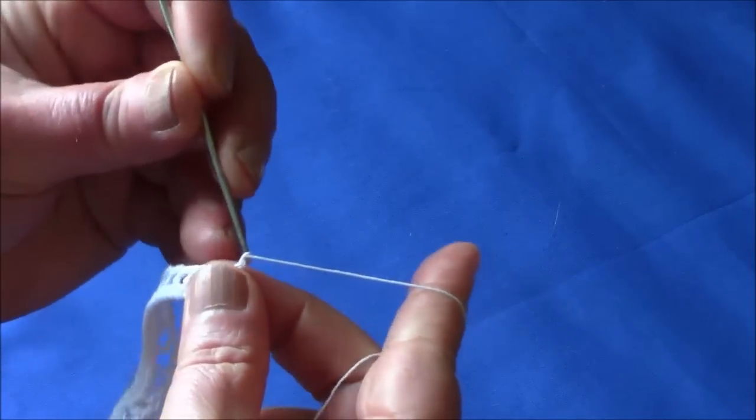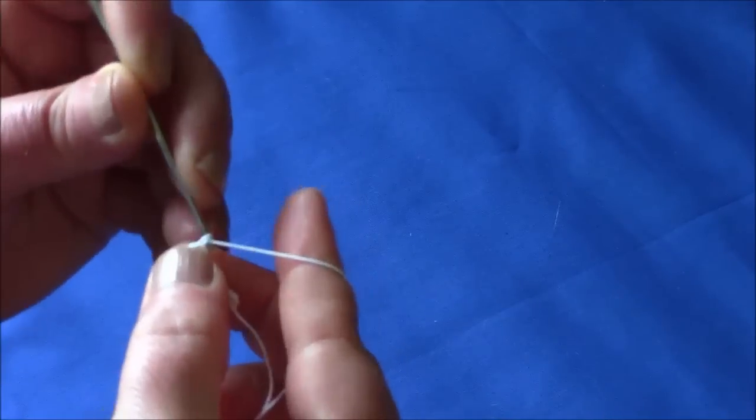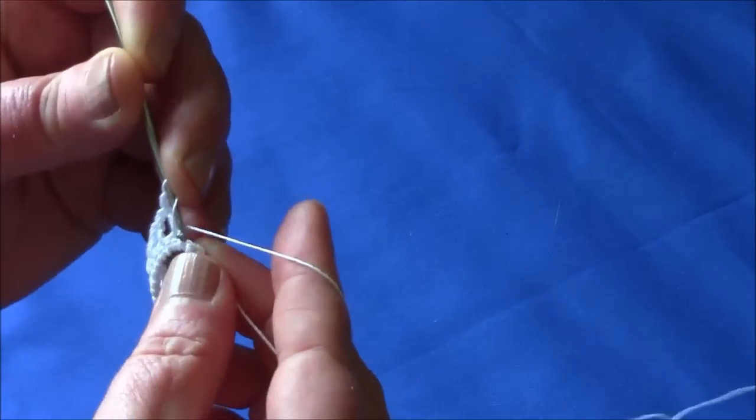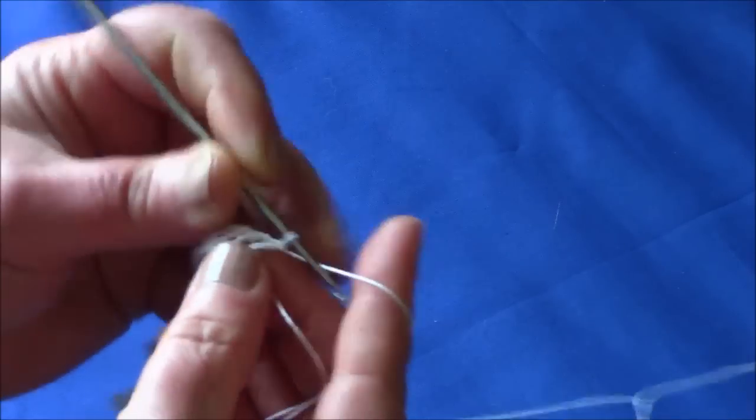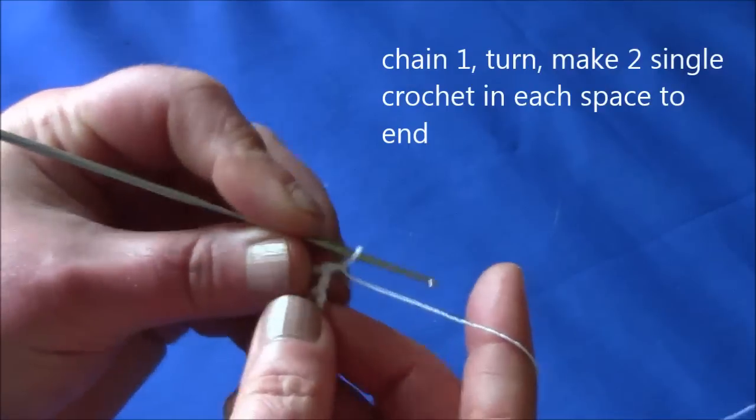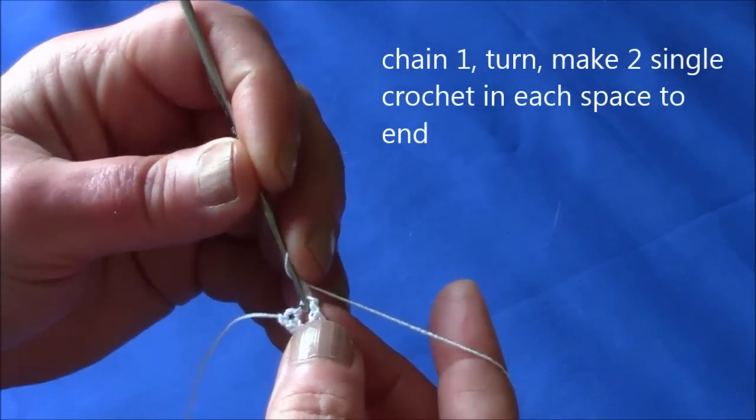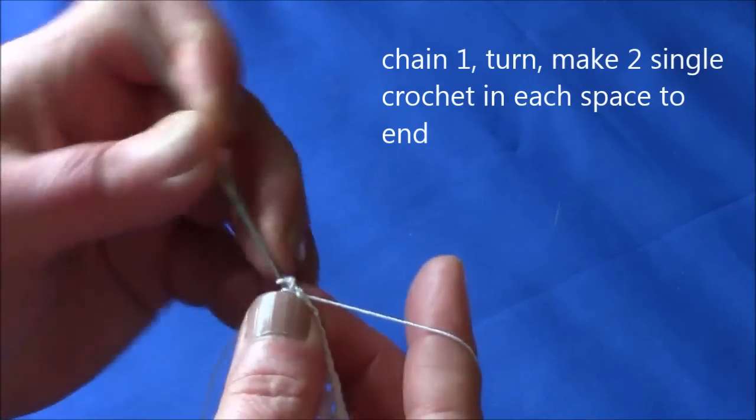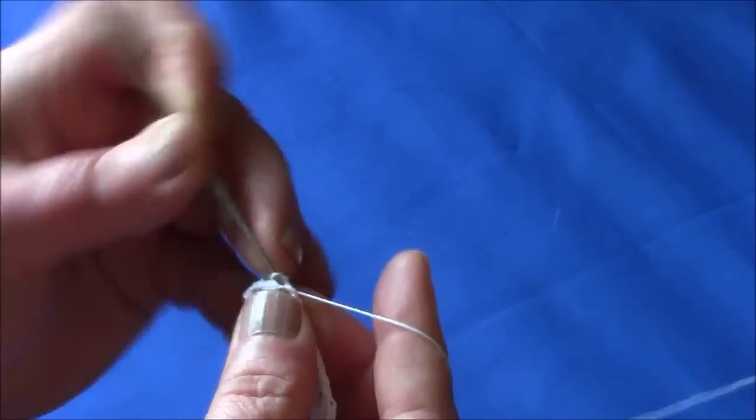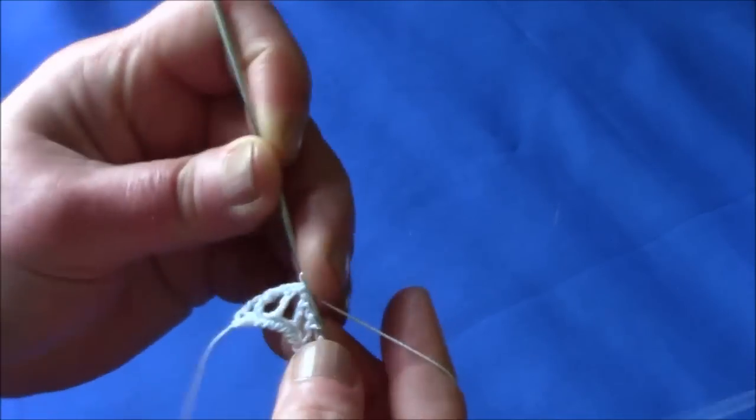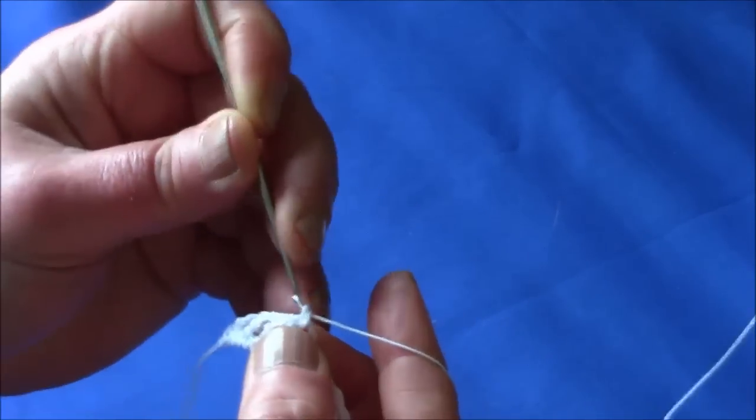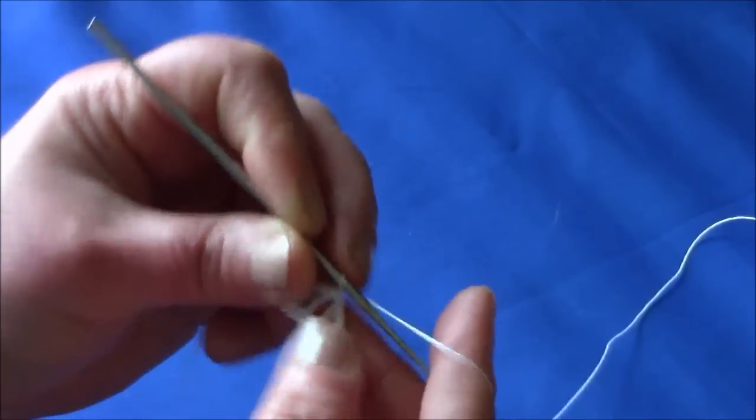So here we're approaching the end. So when you've reached the end, chain 1 and turn round. Now in each gap you do 2 single crochet, and do this to the end. So in every gap.